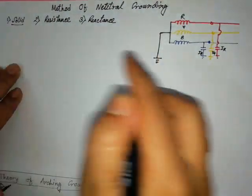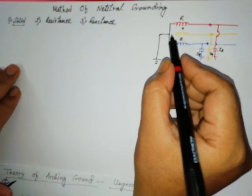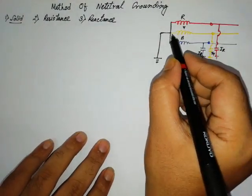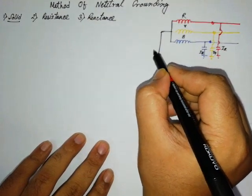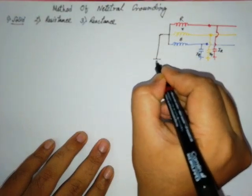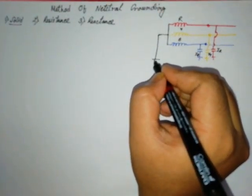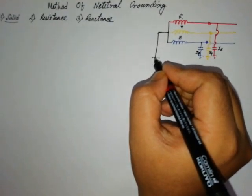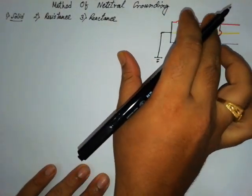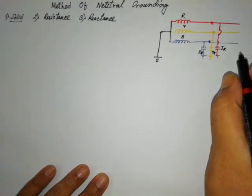We will discuss all the methods and when we use which method. First let me discuss about solid grounding. Solid grounding means there will be no resistance in the path through the ground — it will be a solid ground. That means the resistance of the path to ground is negligible. So it is solidly grounded.